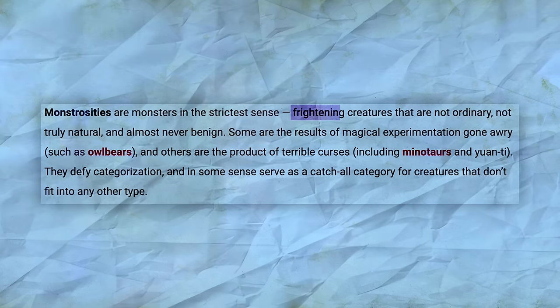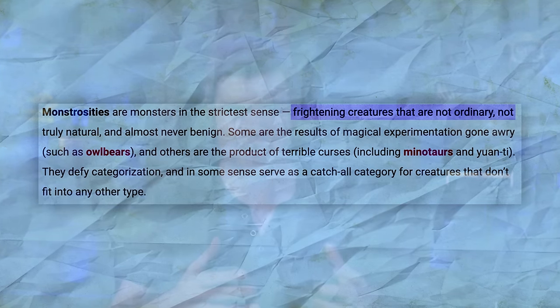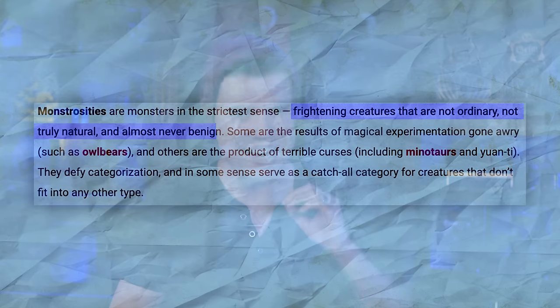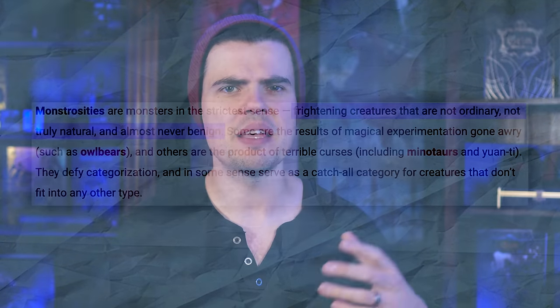So why would you choose to use a monstrosity in your campaign instead of literally any other creature type? What purpose does a monstrosity have to your story? Well fortunately the Monster Manual does say that monstrosities are frightening creatures that are not ordinary, not truly natural and almost never benign. Monstrosities thematically explore the dangers of the natural world but they are supernatural horrors who bring inherent danger to the regions that they inhabit.